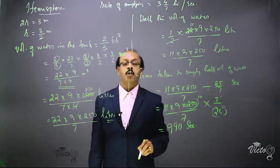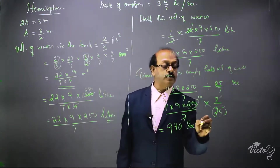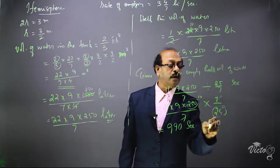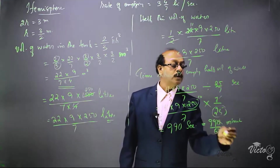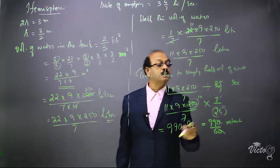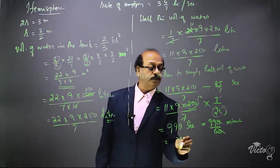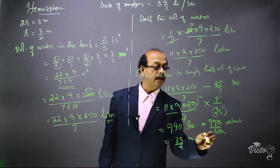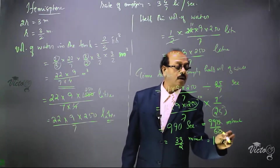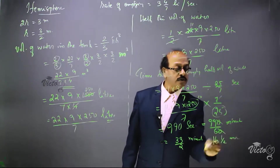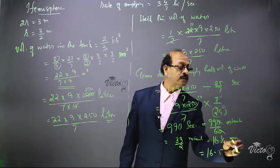Now we divide 990 seconds by 60 to get the answer in minutes. That is 990 divided by 60 — cancelling zeros and dividing by 3 gives 33 by 2 minutes, which is 16 and a half minutes or 16.5 minutes. Both are correct. 16.5 minutes is the answer.